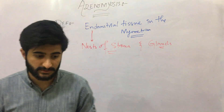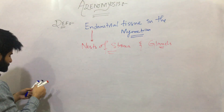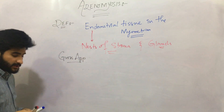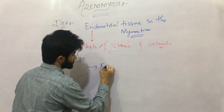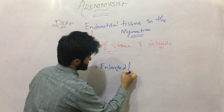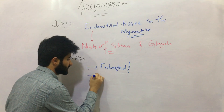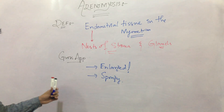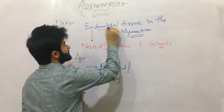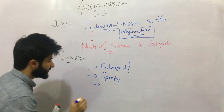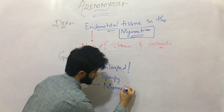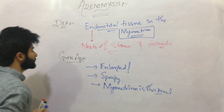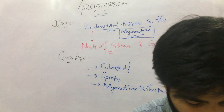Normally this does not happen. This gives a gross appearance of an enlarged uterus. The uterus is enlarged and spongy in nature. As this endometrial tissue has grown into the myometrium, the myometrium is thickened. So this was about the gross morphology of Adenomyosis.